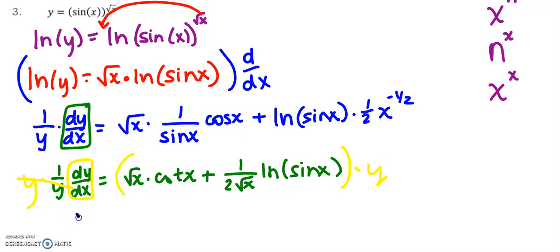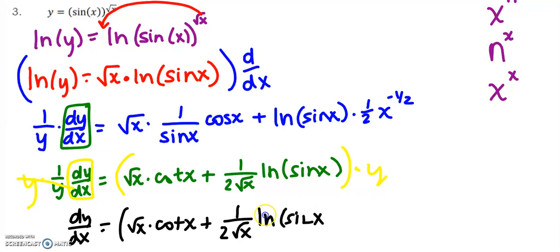The last thing to get that dy/dx all by itself would be to multiply both sides by y. So now my final answer: dy/dx equals (sin x)^(√x) times [√x cot x + (1/(2√x)) ln(sin x)].